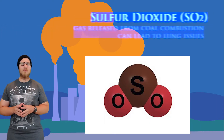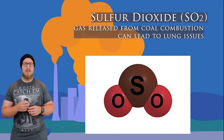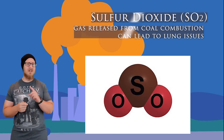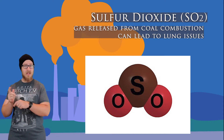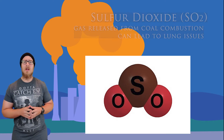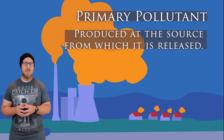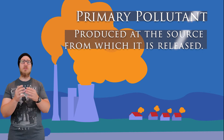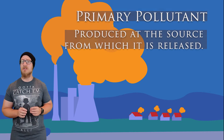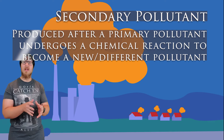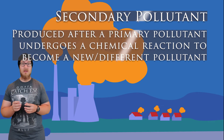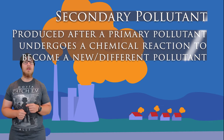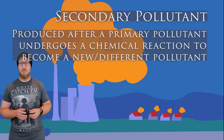Long-term exposure to sulfur dioxide can lead to respiratory issues. A primary pollutant is a pollutant that is produced at the source from which it is released. Some pollutants can undergo chemical reactions to become new substances — those substances are also pollutants, and we call those secondary pollutants.